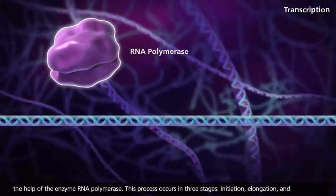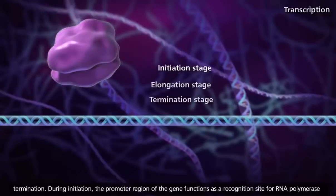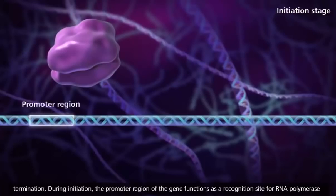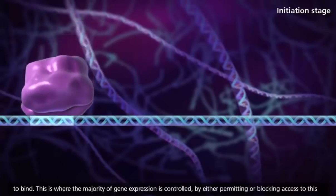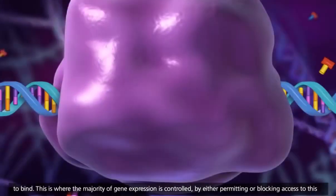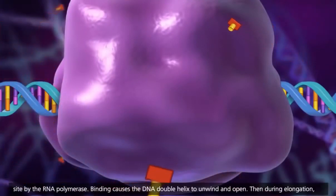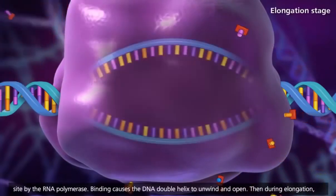This process occurs in three stages: initiation, elongation, and termination. During initiation, the promoter region of the gene functions as a recognition site for RNA polymerase to bind. This is where the majority of gene expression is controlled, by either permitting or blocking access to this site by the RNA polymerase. Binding causes the DNA double helix to unwind and open.